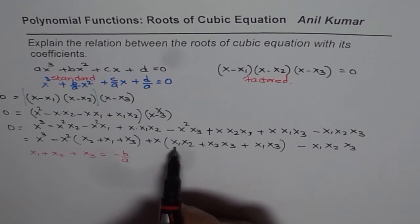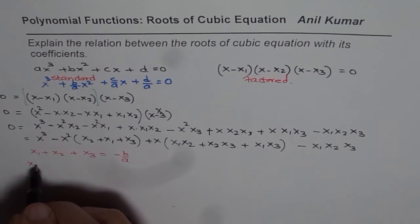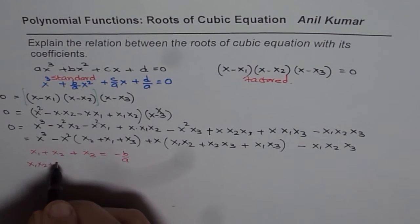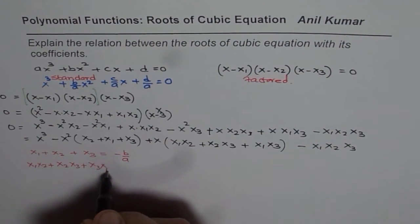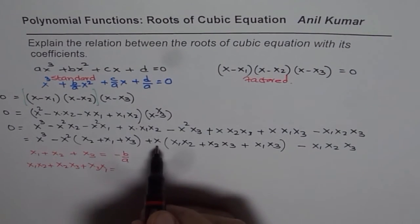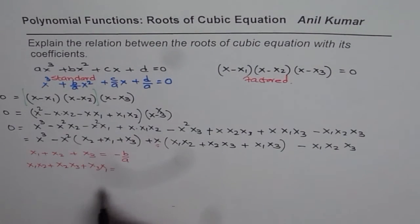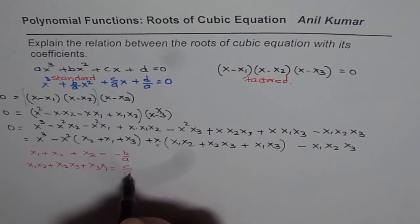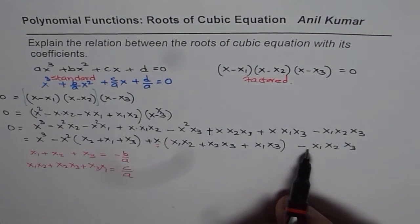Now sum of roots which is x₁x₂ + x₂x₃ + x₃x₁. That if you compare is the coefficient for x. Here coefficient of x is c/A. So that is equals to c/A. And the last term here is d/A with a negative sign.